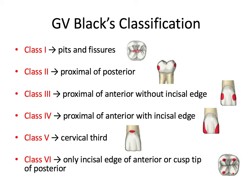Class 3 decay is diagnosed in the proximal surfaces of your incisors and canines. So Class 2 is proximal of posterior, Class 3 is proximal of anterior. One important distinction: Class 3 does not involve the incisal edge.